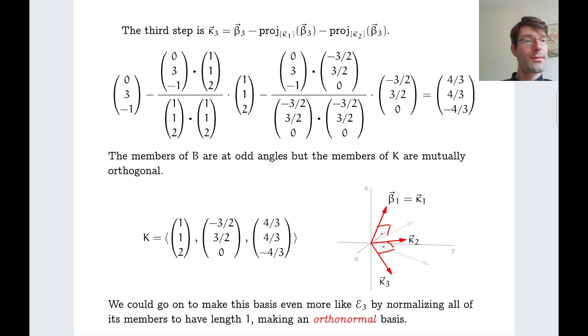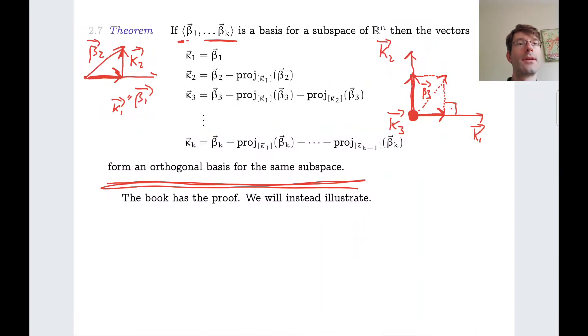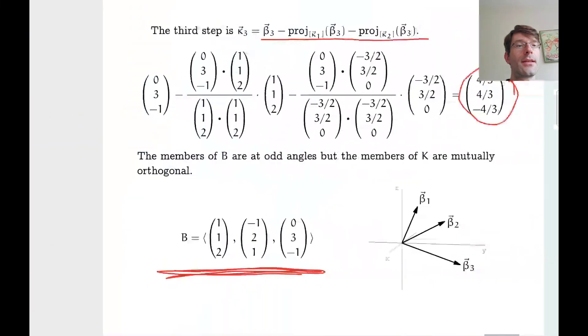Once we have kappa 1, kappa 2, kappa 3, we might also make these basis vectors have length 1 by dividing with their length. And then we get what's called an orthonormal basis. So an orthonormal basis is an orthogonal basis, such that each basis element has length 1. You could already do this while calculating the kappa i. So you could do it straight away like this. You could divide by the length of beta 1 and here you could also divide by the length, so that kappa 2 becomes a length 1 vector. And if you do this, then these denominators all become 1. So in this sense, the calculation simplifies a bit.